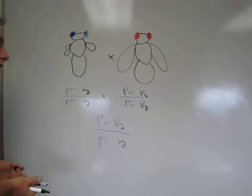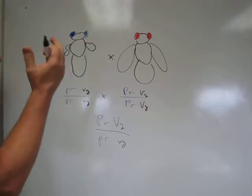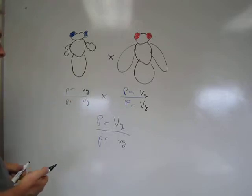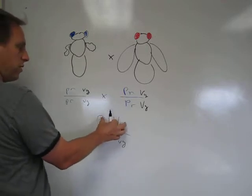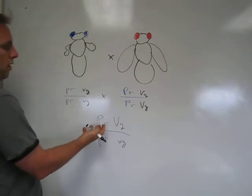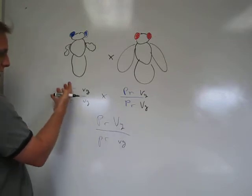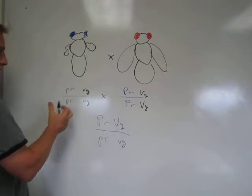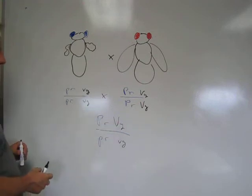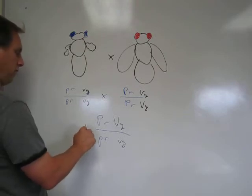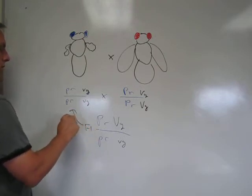You can do something called a test cross — you back cross to the mutant line, which only has recessive alleles, so the mode of transmission is instantly revealed from the parents. The recessive alleles reveal the allele inherited from the back cross parent. So this is the F1, and we're going to do a back cross.